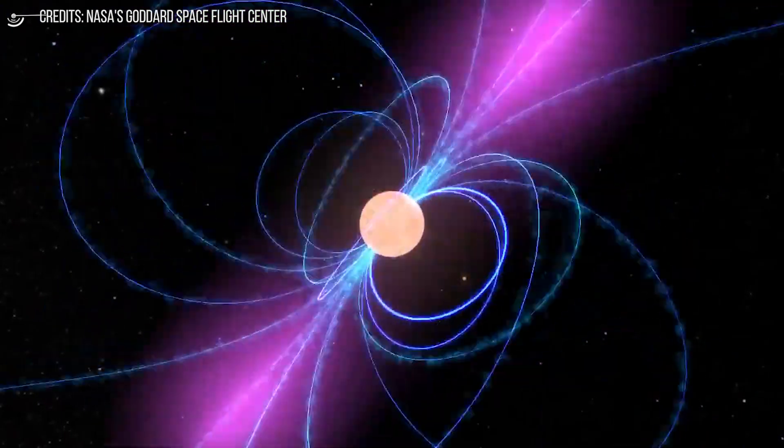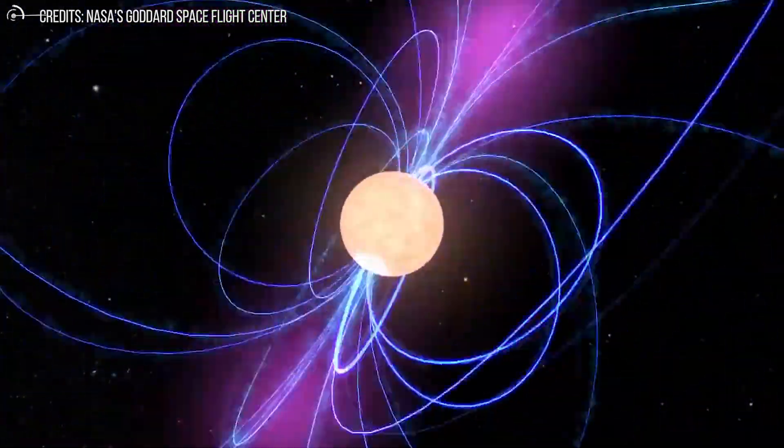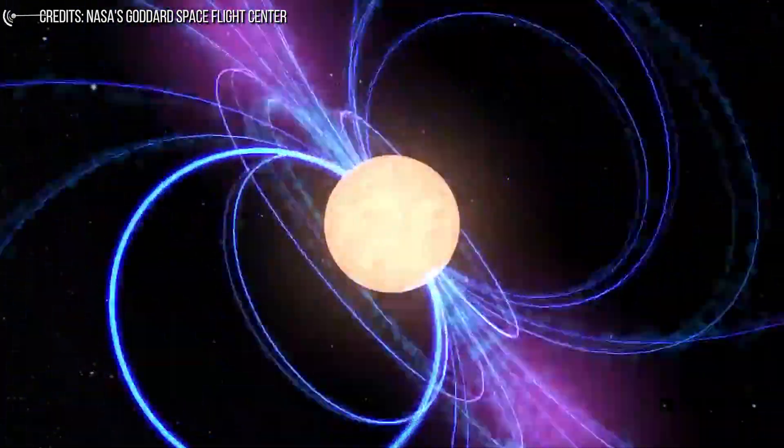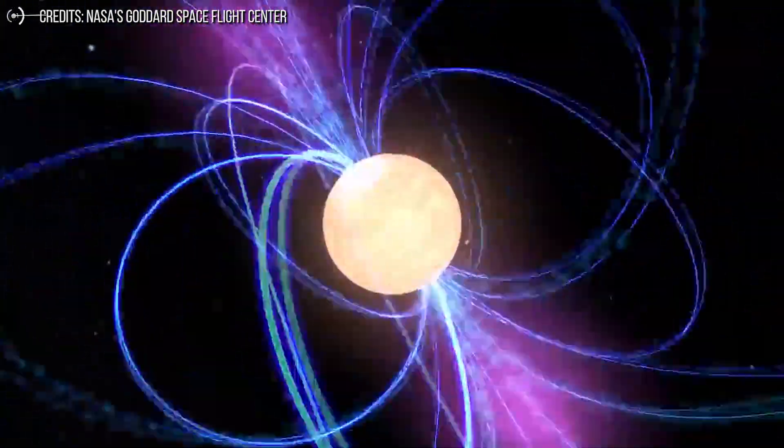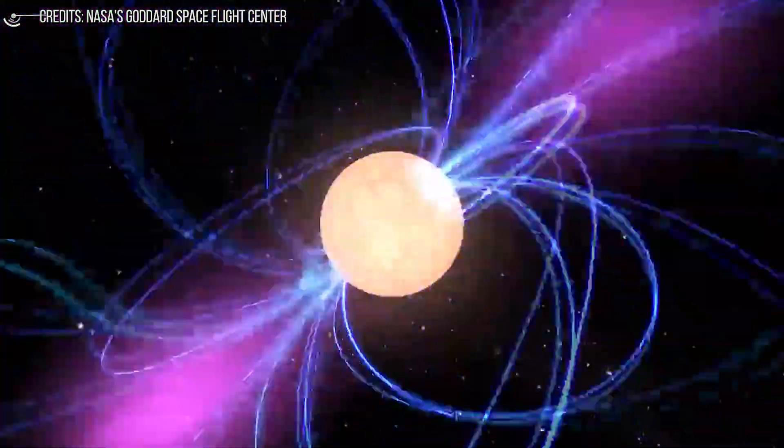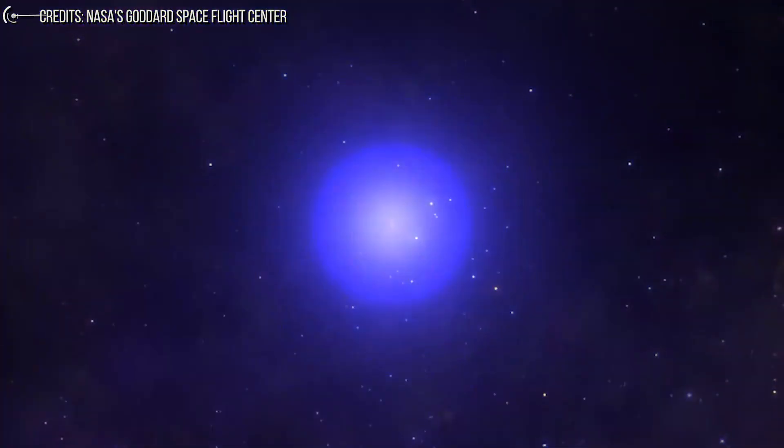If one plots the graph of energy of a pulsar versus its age, one soon discovers that there is a region of the plot in which we can't see any pulsar. This zone is called Pulsar's Graveyard. We estimate that there are about 100 million neutron stars in our galaxy, most of them rotating too slowly to come to our notice.